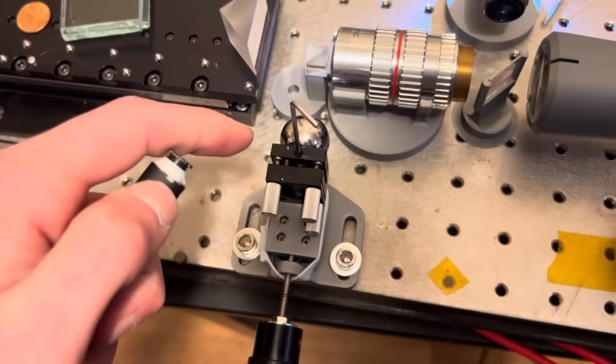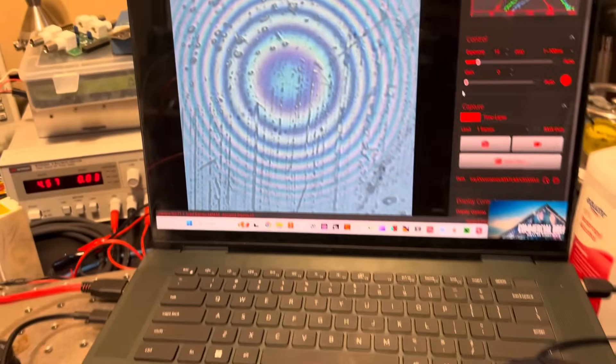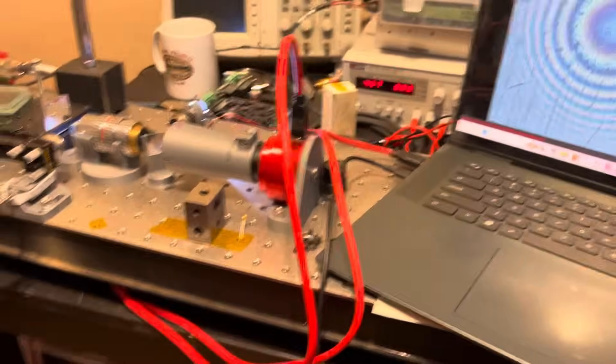Here's the fringe pattern we're looking at. This is kind of a weird setup here. We're looking at this ball bearing to try and measure the surface roughness of the ball bearing. Really beautiful fringe pattern, but that's besides the point.